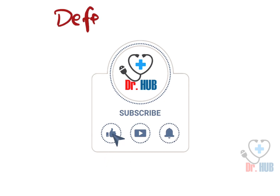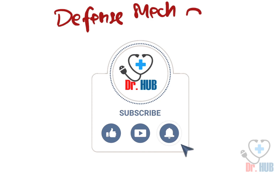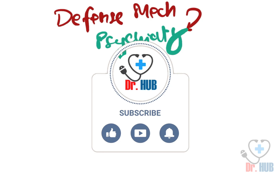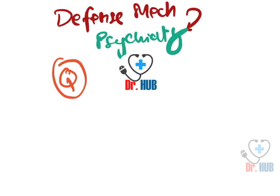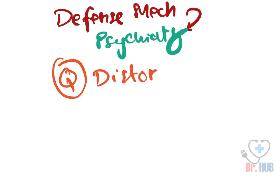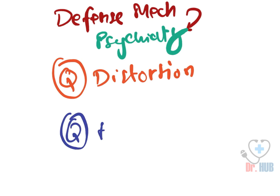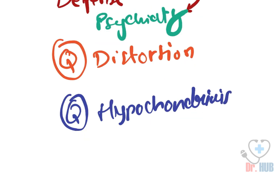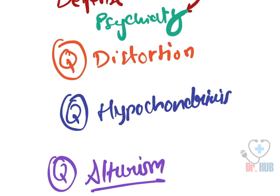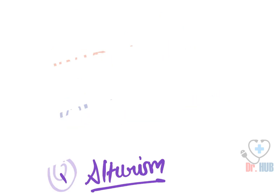Today we are going to do an interesting topic: defense mechanisms in psychiatry. As usual, we are going to start off with a few questions. What is distortion? What is hypochondriasis? What is altruism? In this video we will find out the answers to all these questions and learn a lot more.